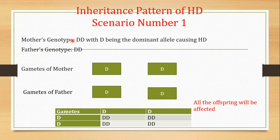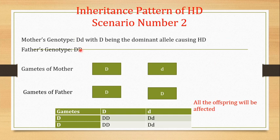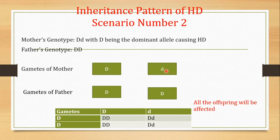This means that if both the mother and father are homozygous for the HD disease allele, all offspring are going to be affected. Scenario number two: the mother is heterozygous — she has one dominant allele capital D and one normal allele small d — but the father is homozygous for the dominant allele. The gametes of the mother will be of two types: 50% carrying capital D and 50% carrying small d. The father's gametes will all be capital D.